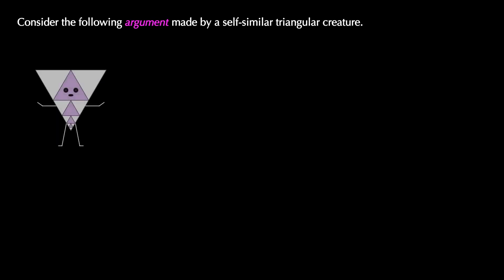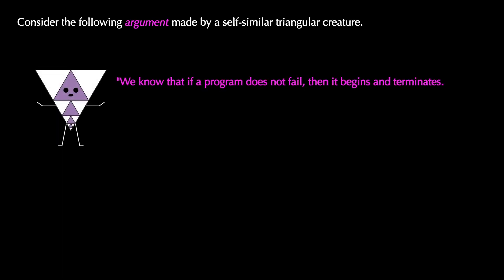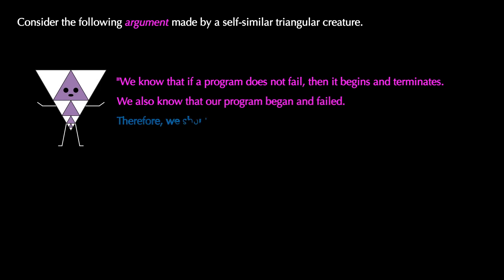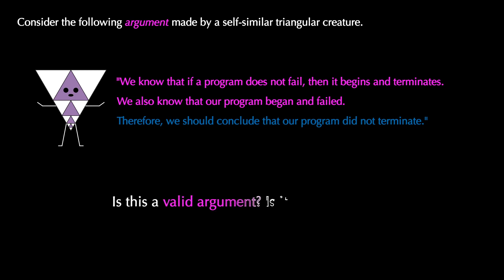Consider the following argument made by a self-similar triangular creature. They say: we know that if a program does not fail, then it begins and terminates. We also know that our program began and failed. Therefore, we should conclude that our program did not terminate. Is this a valid argument? Is it logically sound? And how can we even figure that out?